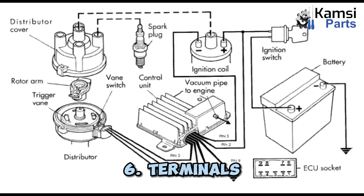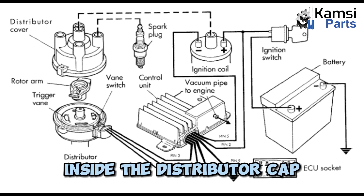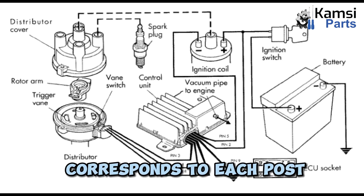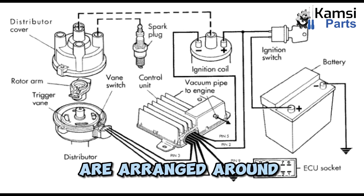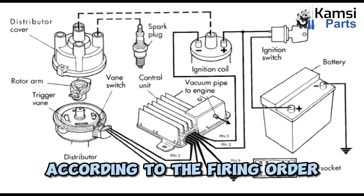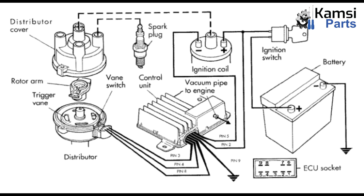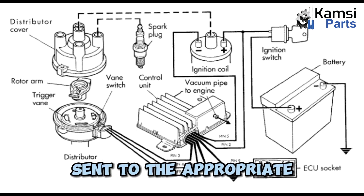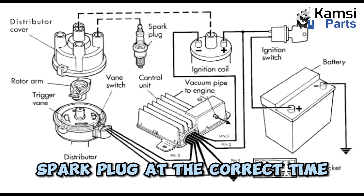6. Terminals. Inside the distributor cap, there is a terminal that corresponds to each post. The plug terminals are arranged around the periphery of the cap according to the firing order, so that secondary voltage is sent to the appropriate spark plug at the correct time.